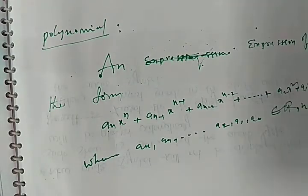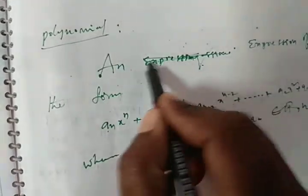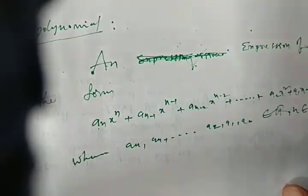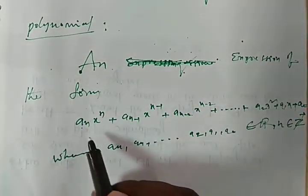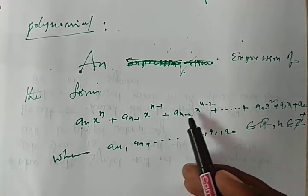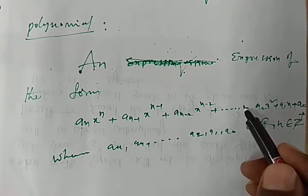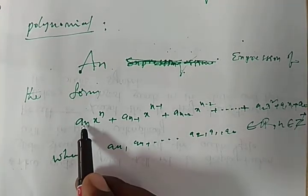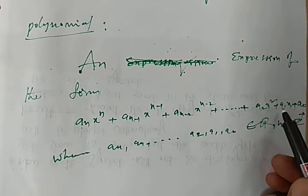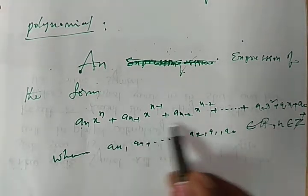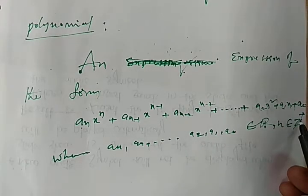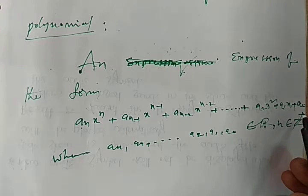Let us see the definition. A polynomial is an expression of the form: a_n·x^n + a_{n-1}·x^{n-1} + a_{n-2}·x^{n-2} + ... + a_2·x² + a_1·x + a_0. Here a_n, a_{n-1}, a_{n-2}, ..., a_2, a_1, a_0 are all constants belonging to real numbers. The powers n, n-1, n-2 belong to positive integers, also called natural numbers (Z⁺).